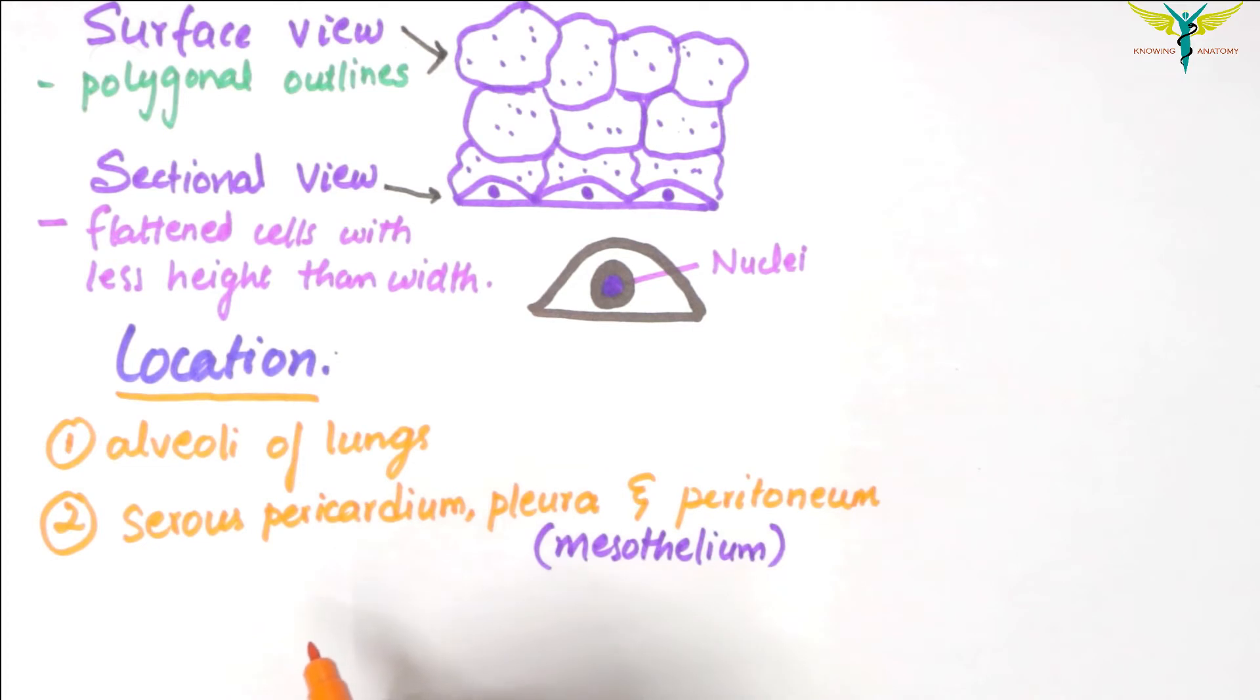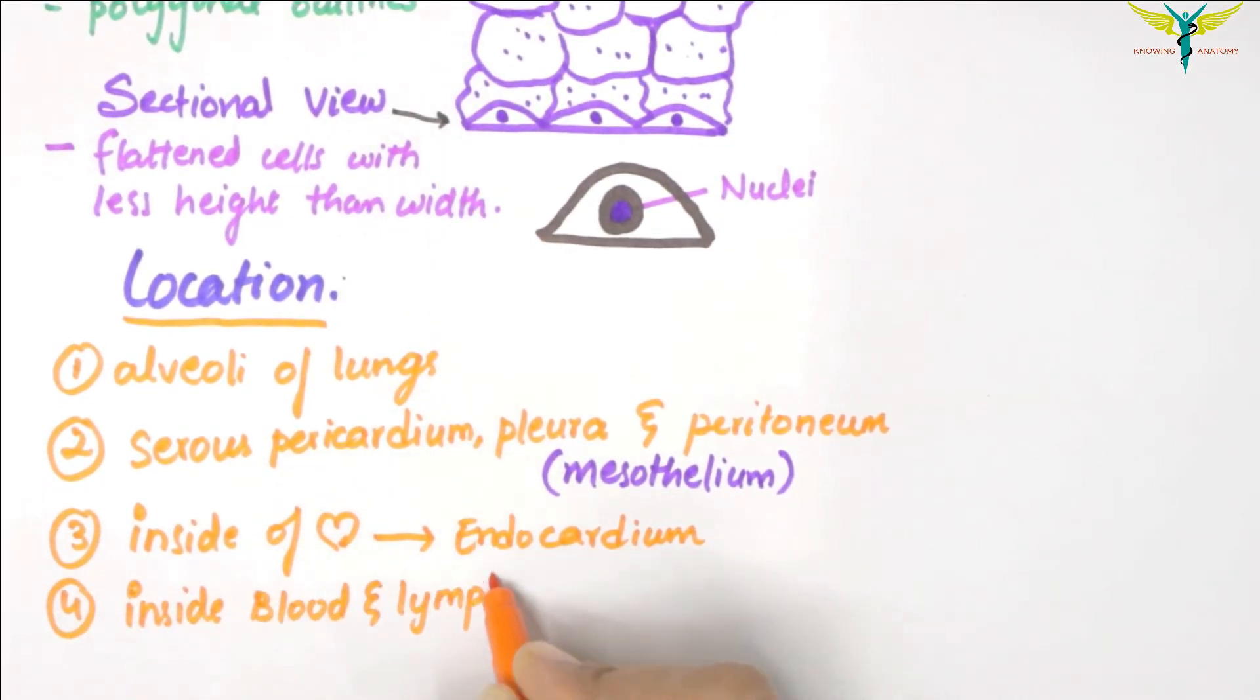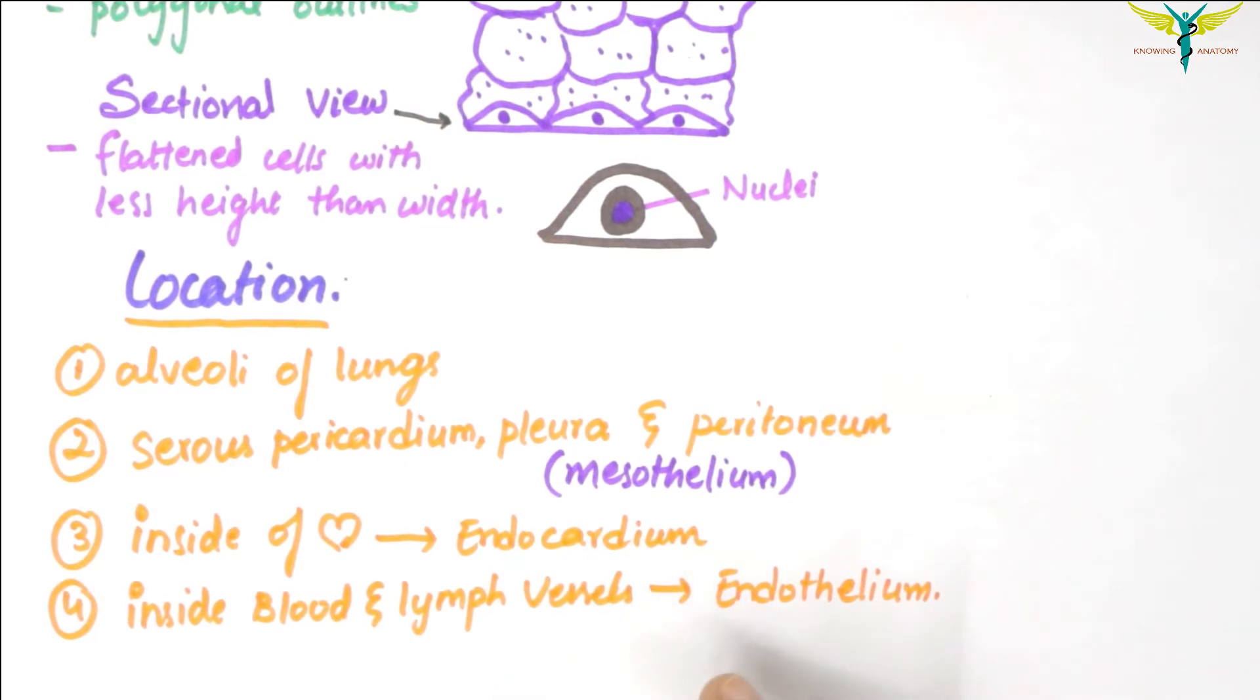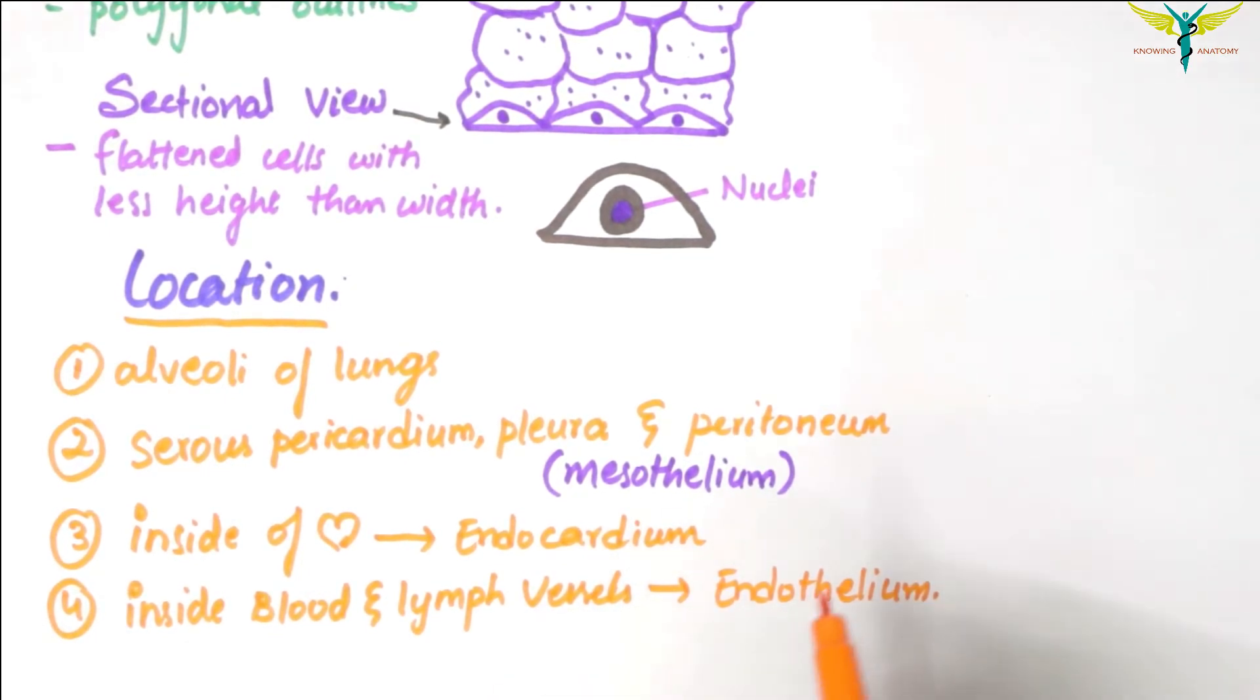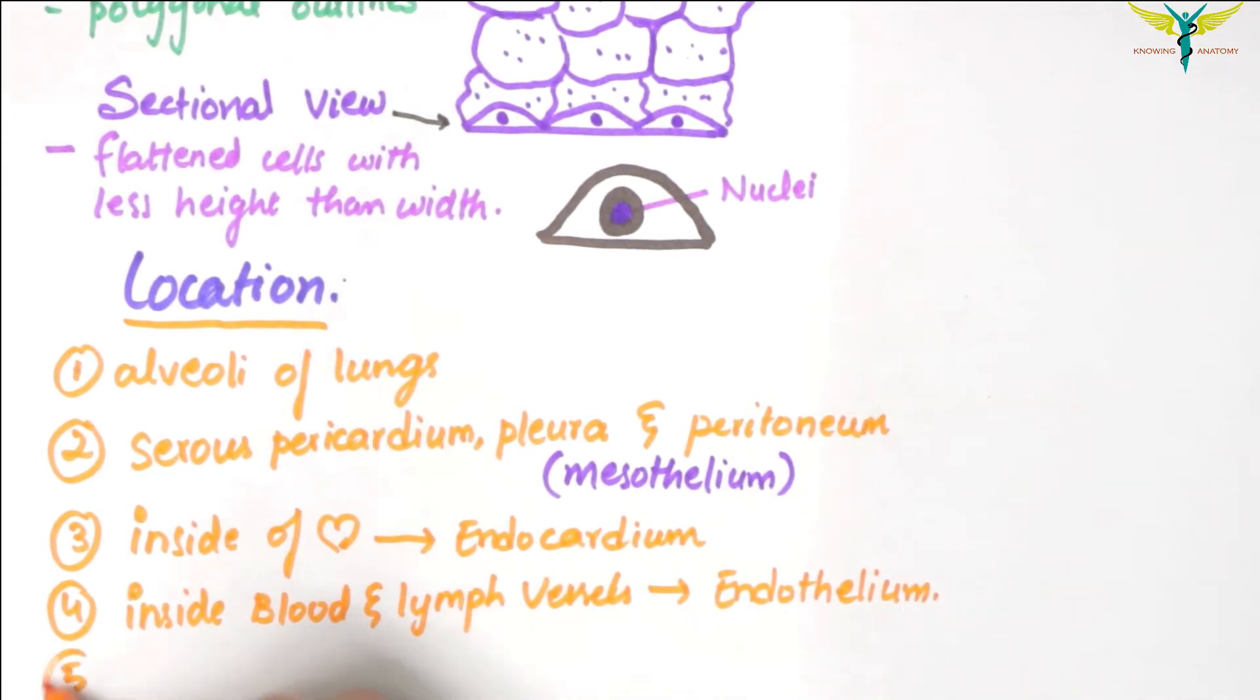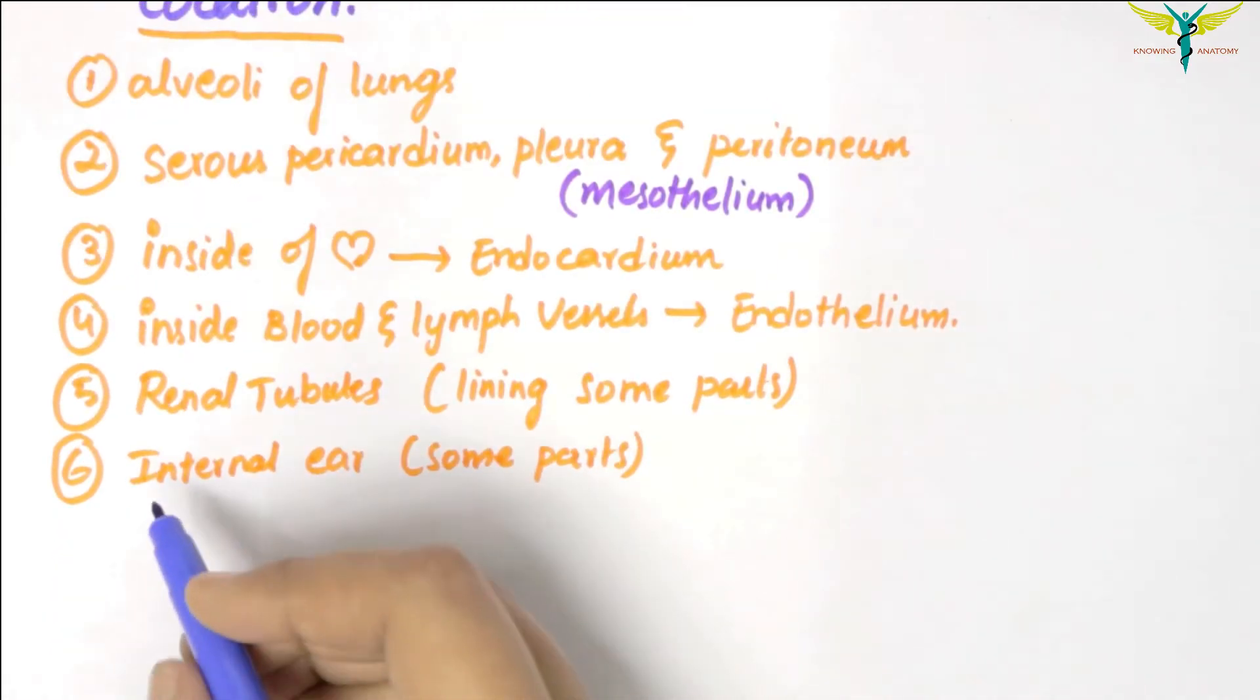The simple squamous epithelium lines the inside of the heart where it is called the endocardium, and it lines the blood vessels and the lymphatics where it is called the endothelium. The squamous epithelium is also found in the lining of some parts of the renal tubules and in some parts of the internal ear.